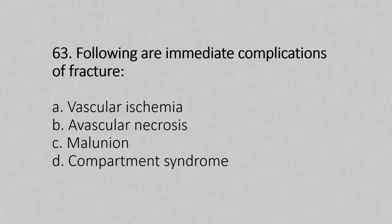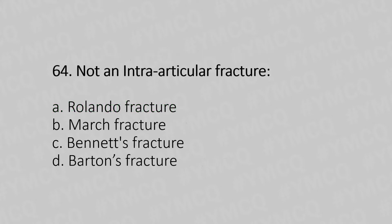Question 63: Following are the immediate complications of a fracture — option A: vascular ischemia, option B: avascular necrosis, option C: malunion, option D: compartment syndrome. The answer is option A: vascular ischemia.